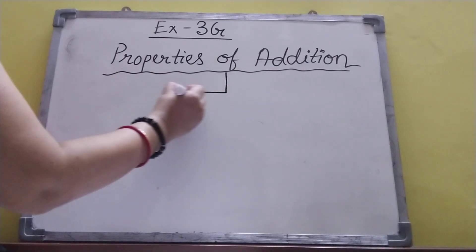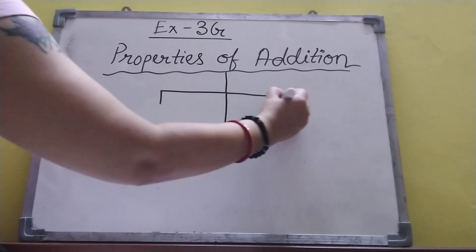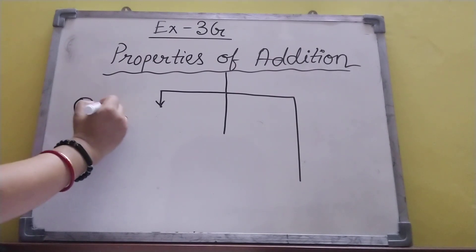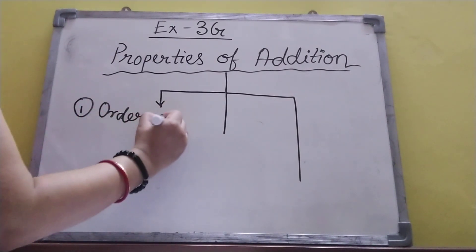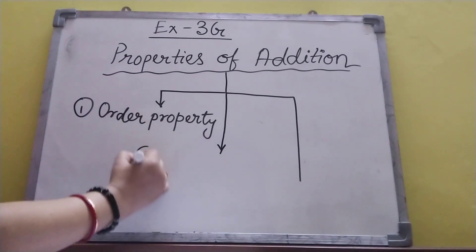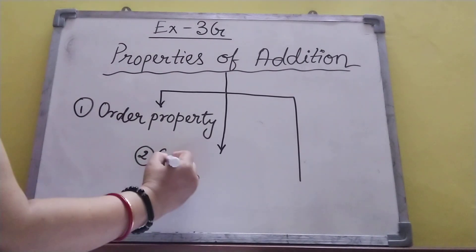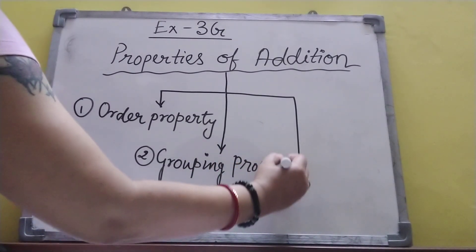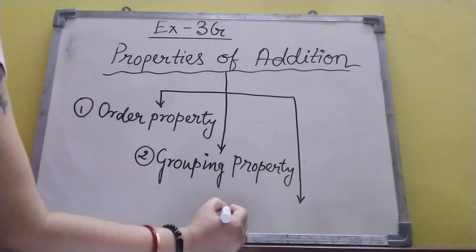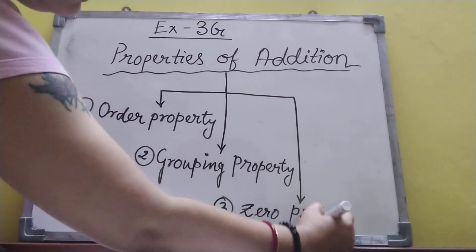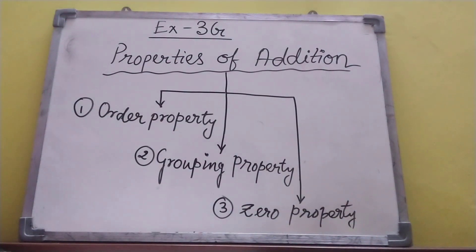This is divided into 3 parts. Number 1: Order Property. Number 2: Grouping Property. Number 3: Zero Property. I will be explaining number 1 first, then 2, then 3.